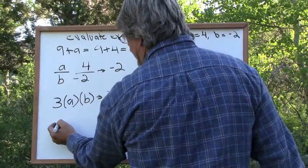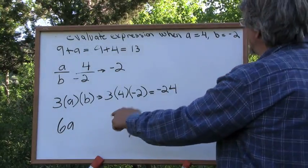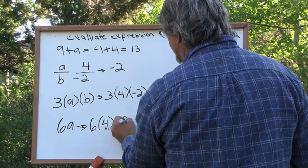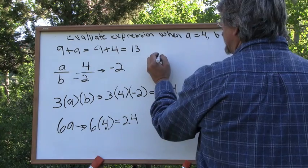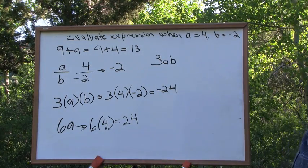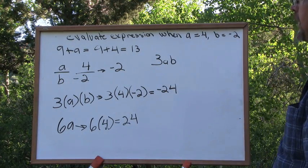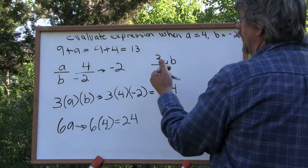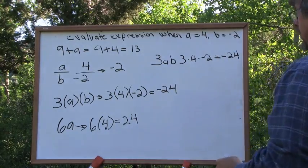What if we're given the expression 6 times A — just 6A? That means it's multiplied. A is 4, so this becomes 6 times 4, which is 24. Piece of cake. What if we're given the expression 3AB? It's the same thing, except written without parentheses. This is telling you 3 is multiplied by A as well as B. We've already done it: 3 times 4 times negative 2 is negative 24. It's that simple.